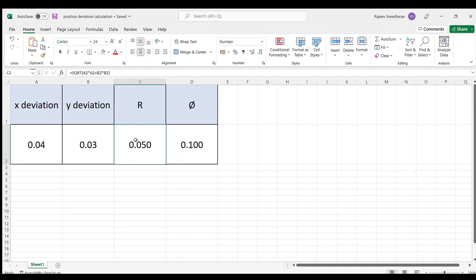Now, this particular cell is having a formula, square root of a2 square plus b2 square. a2 is this, b2 is this, so we get the radius element of this x and y. And if we multiply by 2, you will get the diameter element of this deviation.